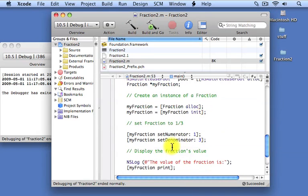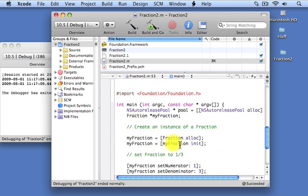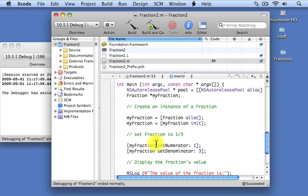Then we do the same thing with the setDenominator method. We pass it here, the value 3. The value 3 gets stored inside this local variable d. d gets stored inside the instance variable denominator, and that's how we set the instance variables for our fraction object, myFraction.